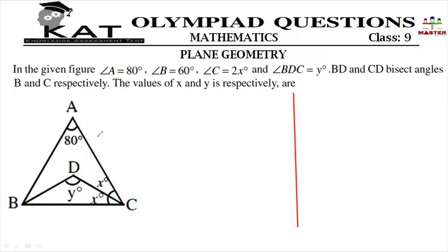Now, we have a figure. Angle A is 80 degrees, angle B is 60 degrees, angle C is 2x degrees — that is the unknown angle. Angle BDC is Y degrees.